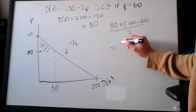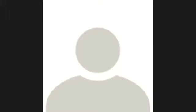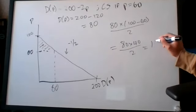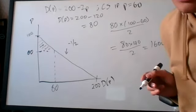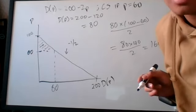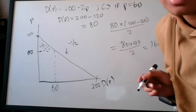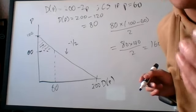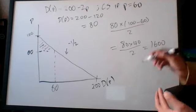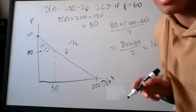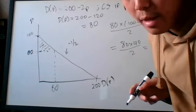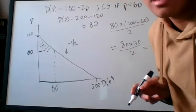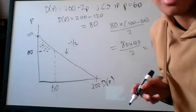So this is 80 times 40 over 2, which equals 3200 over 2, which is 1600. You can see the answer is 1600. Just the fact that you got the right answer is what's important.